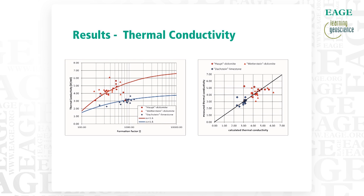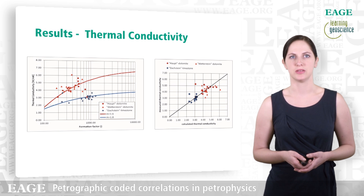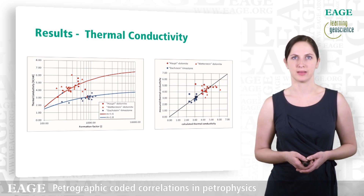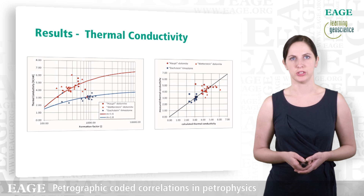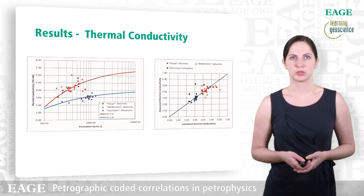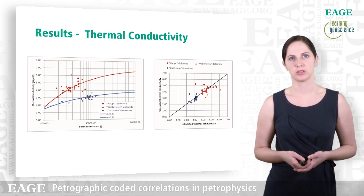The last plot with the correlation of thermal conductivity and formation factor is presented for carbonates. We have in red the dolomite with the higher thermal conductivity and in blue the limestone. A clear separation between these two becomes visible. On the left side you see thermal conductivity versus formation factor; the lines are correlation lines calculated with the Clausius-Mossotti inclusion model and with the RG equation. On the right-hand side you see the thermal conductivity calculated versus measured, to get an impression of the fit of the data.